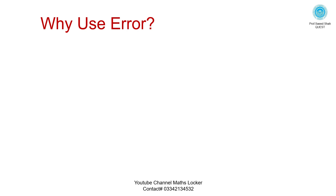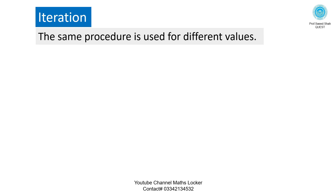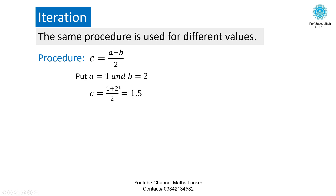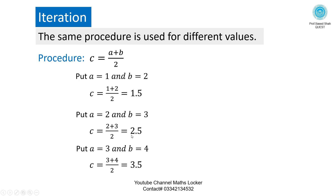Why use error to stop an equation or procedure? The same procedure c = (a + b)/2 is used for different values: a=1, b=2 gives c=1.5; a=2, b=3 gives c=2.5; a=3, b=4 gives c=3.5. We use the same procedure for different values a1b2, a2b3, a3b4. This is called the equation procedure.